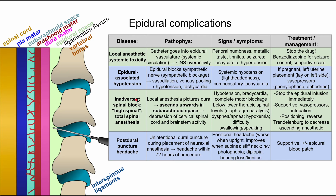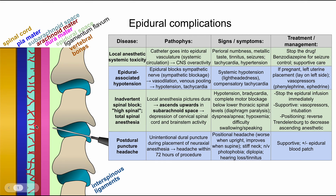Next is one of the more serious complications: inadvertent spinal block, also called a high spinal or total spinal anesthesia. The pathophysiology is that the needle punctures through the dura mater into the subarachnoid space, and drugs are accidentally injected there. This allows the drugs to ascend upward in the subarachnoid space, causing depression of cervical spinal cord and brainstem activity.